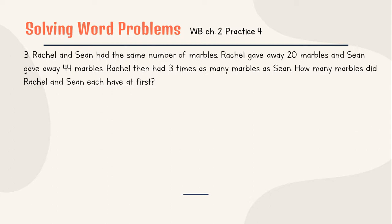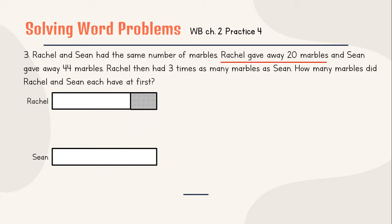Number 3. Rachel and Sean had the same number of marbles. Rachel gave away 20 marbles and Sean gave away 44 marbles. Please note that Rachel did not give these marbles to Sean. Sean also didn't give these 44 marbles to Rachel. So they gave those marbles to someone else. Rachel then, after giving away, Rachel then had 3 times as many marbles as Sean. How many marbles did Rachel and Sean each have at first? So the question is, at first. Rachel has at first and Sean have at first. How many are there? So we know that Rachel and Sean had the same number. So we have same box. Rachel gave away 20 marbles. Gave away 20 marbles means that we're going to cut that down. Or in this case, I will just make it different. 20 marbles. And Sean gave away 44 marbles.